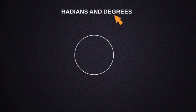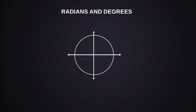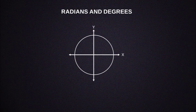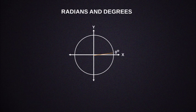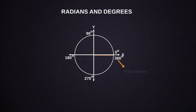First, about degrees. Let us draw the x-axis and y-axis in a complete circle. Let us divide the complete circle into four parts and give them 0 degrees, 90 degrees, 180 degrees, and 270 degrees. Then a full circle rotation becomes 360 degrees.